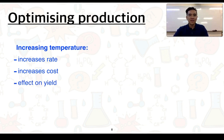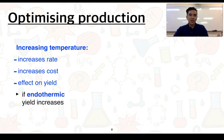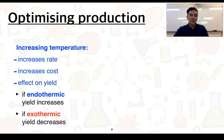In terms of the effect on yield, this really depends on the nature of the reaction. We learnt from subtopic 2.2 that if we have an endothermic reaction, then increasing temperature is going to increase the yield, whereas if it's an exothermic reaction, this is going to decrease the yield.